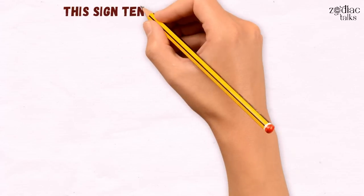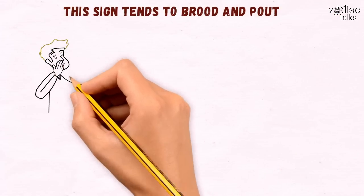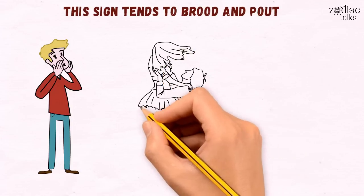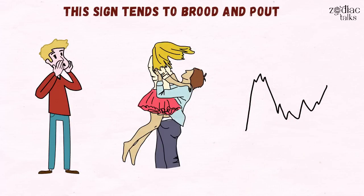This sign tends to brood and pout, and actually shout when they don't get things their way. They can also feel like handfuls when being in a relationship with them if they're stuck on their lower vibration.